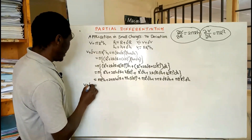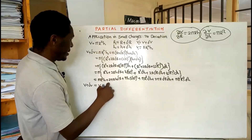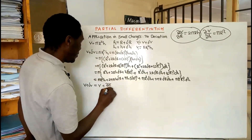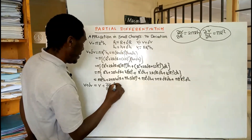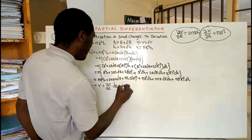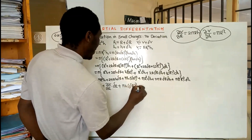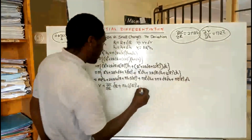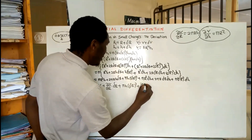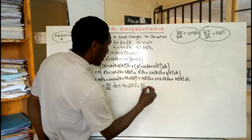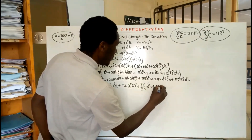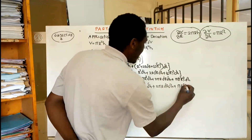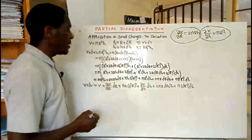So we have V plus delta V is equal to V plus 2 pi RH times delta R — where 2 pi RH is the partial derivative of V with respect to R — then we add pi H times delta R squared, plus pi R squared, which is the partial derivative of V with respect to H, multiplied by delta H, plus 2 pi R times delta R times delta H plus pi delta R squared times delta H.